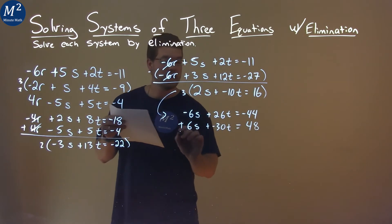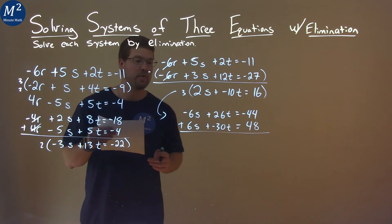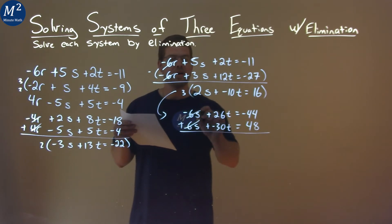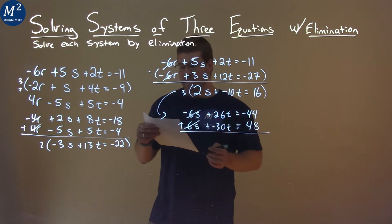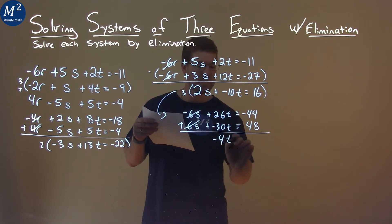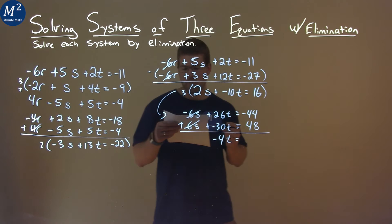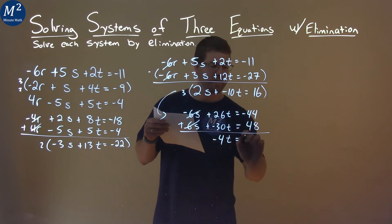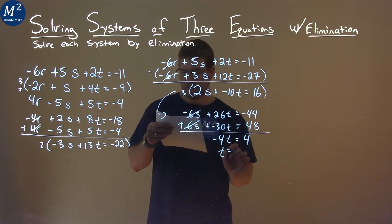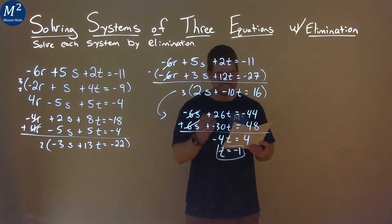If we add these two equations together, what happens? Well, the s's cancel. Negative 6s plus 6s cancels. 26t plus negative 30t is negative 4t, and negative 44 plus 48 is positive 4. Divide both sides by negative 4, and t equals negative 1. So all that work, we've got one value: t is negative 1.